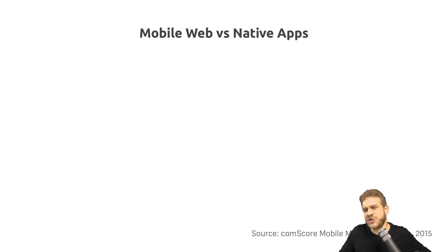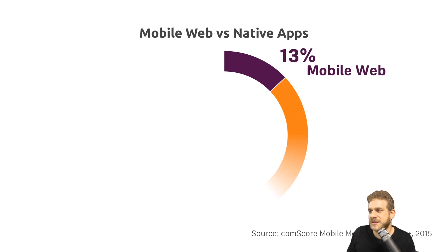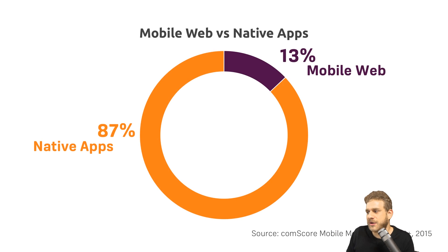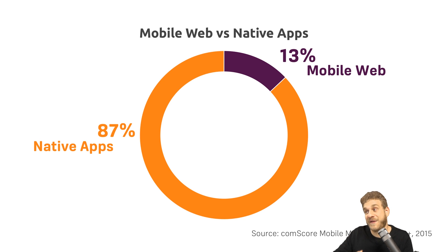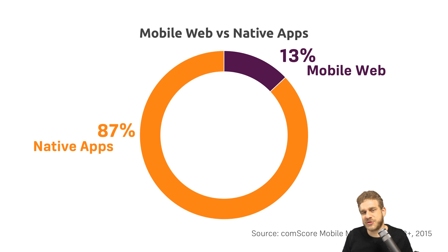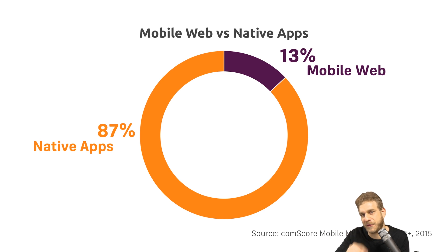So why wouldn't you just build a mobile app if you want all of that? Let's have a look at some numbers. Here we see the usage of apps or of things on a mobile device. Of their available time, users spend 87% in native mobile apps and 13% on the mobile web — so in the browser of their mobile phone searching web pages.